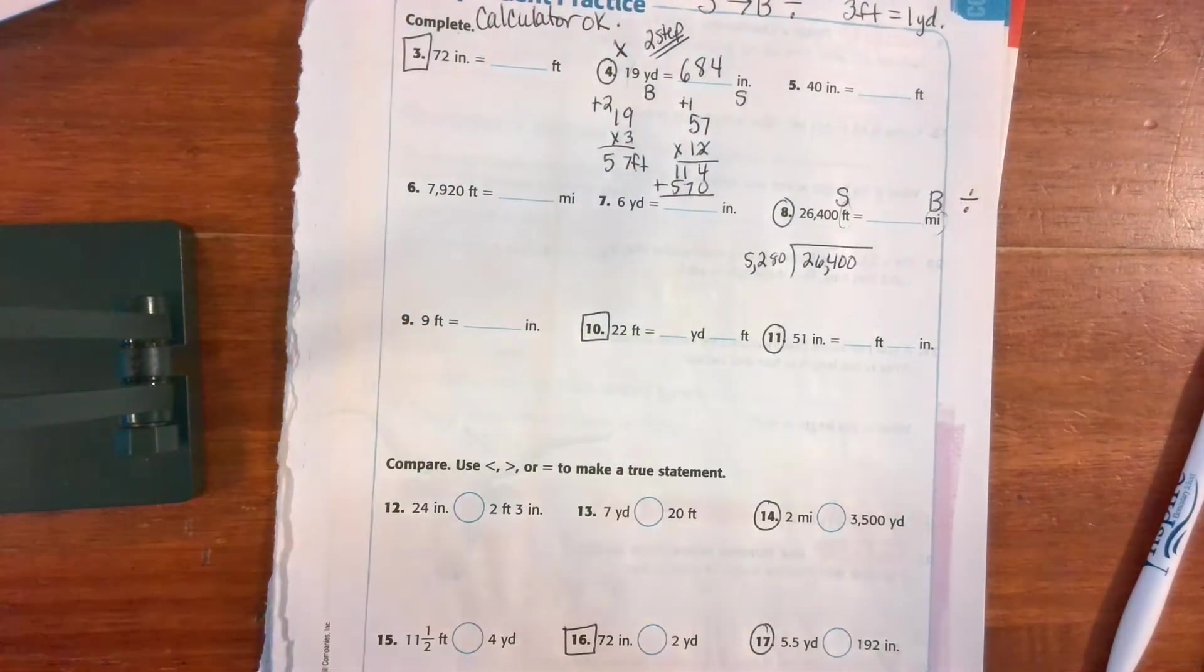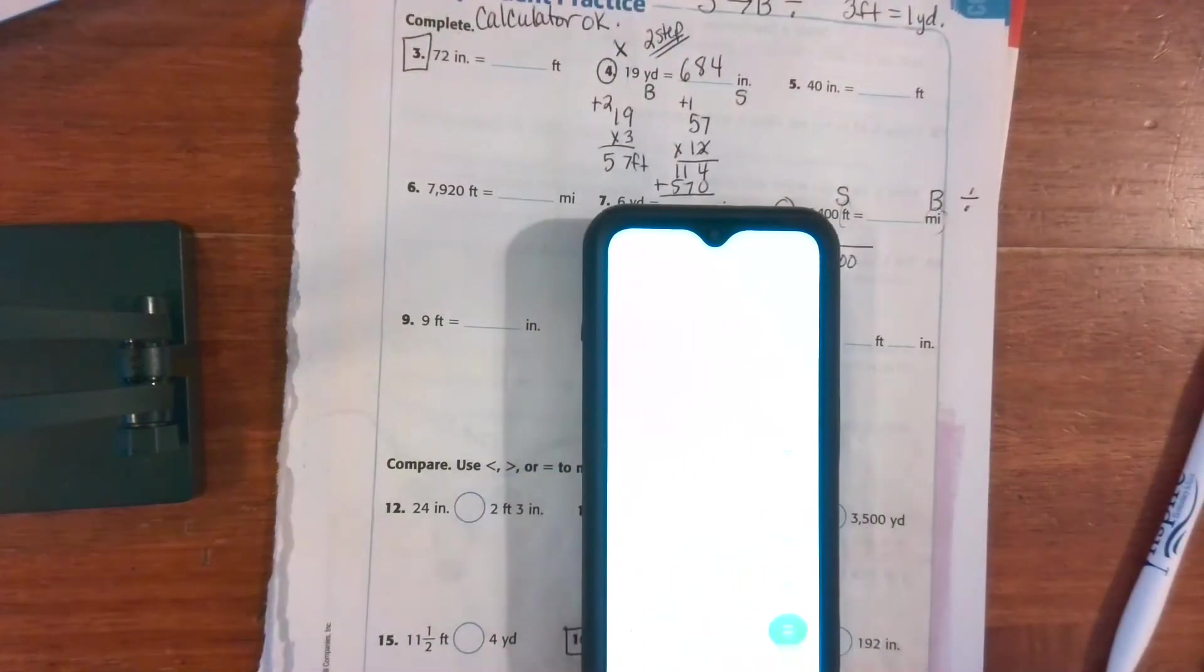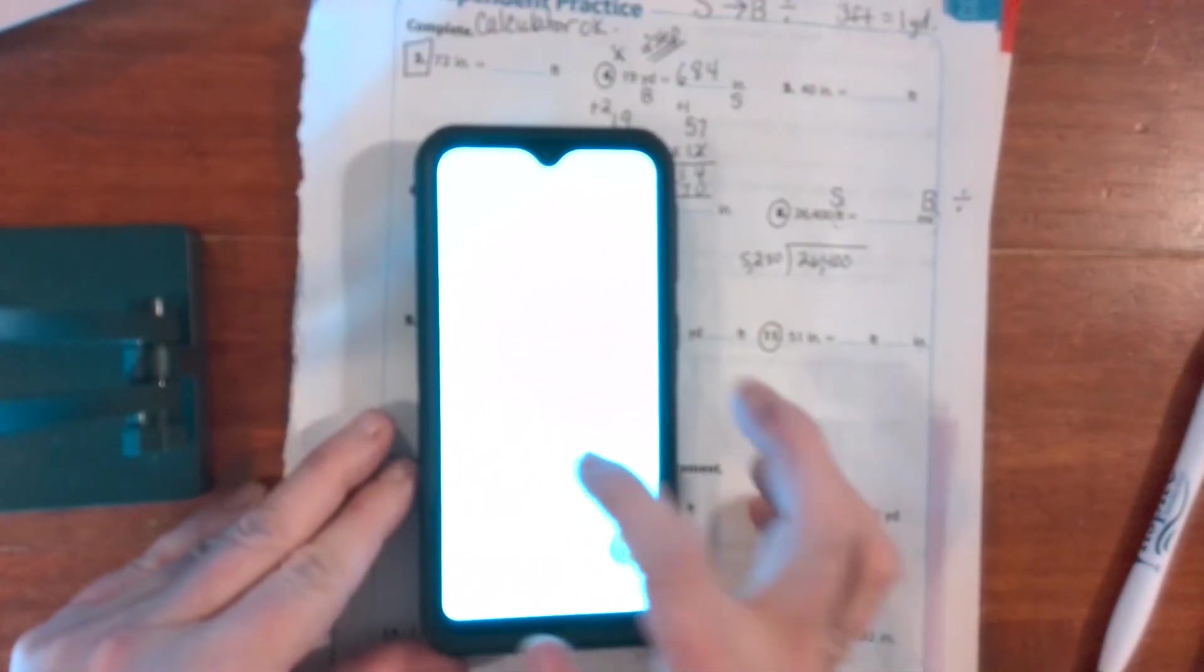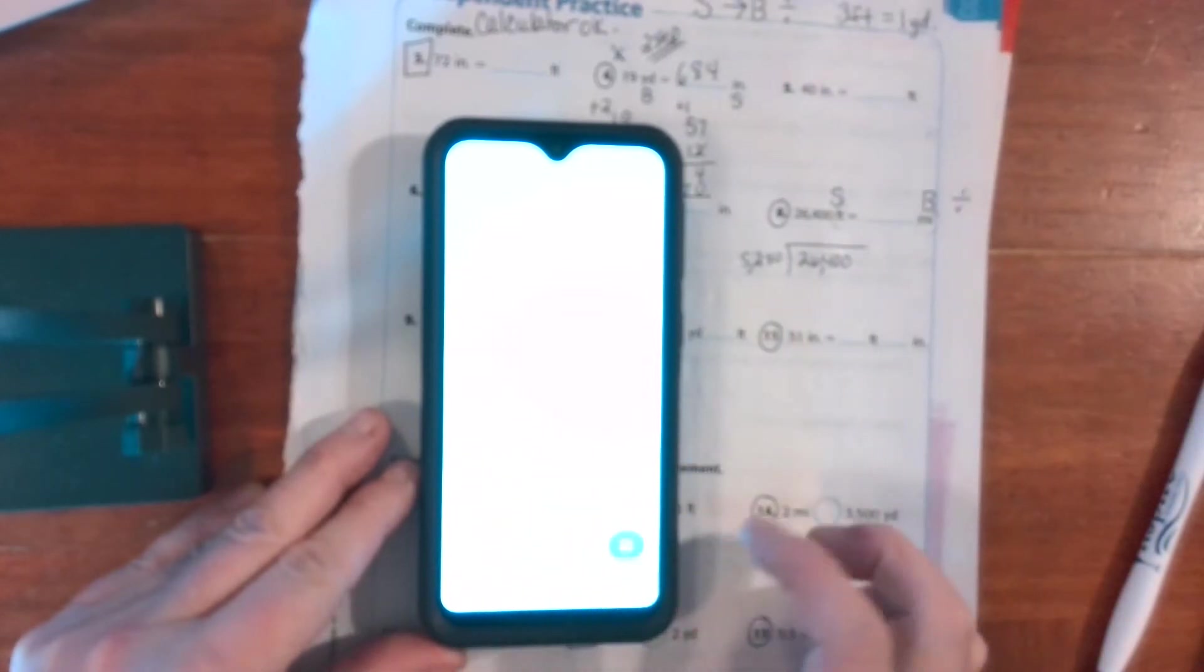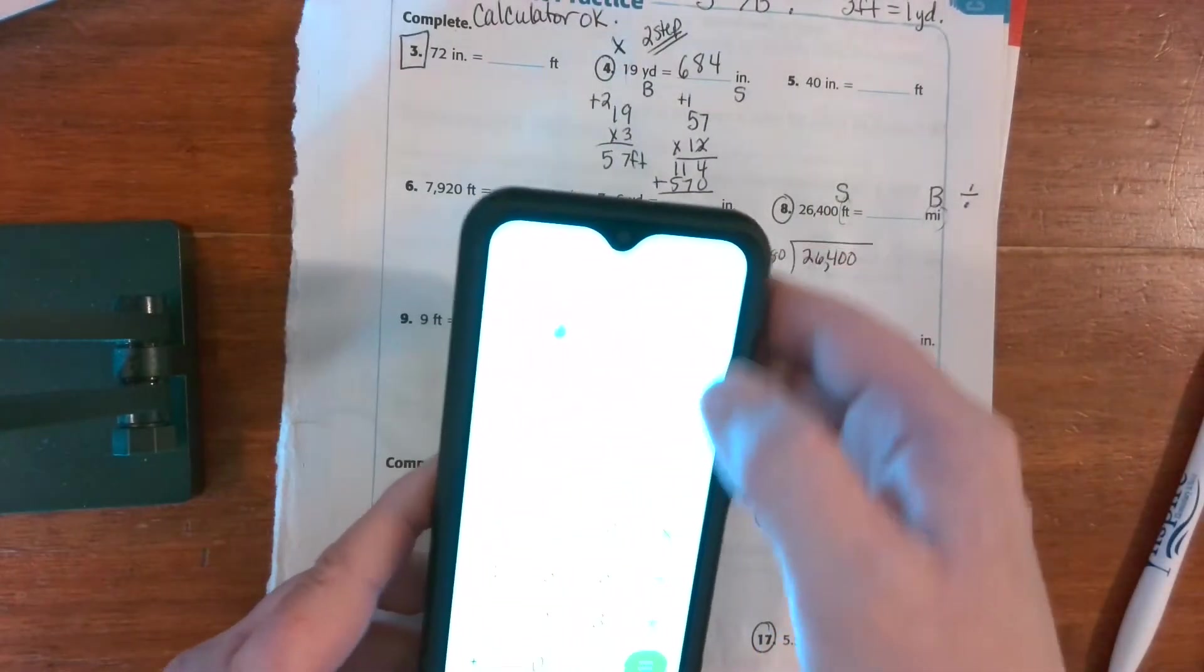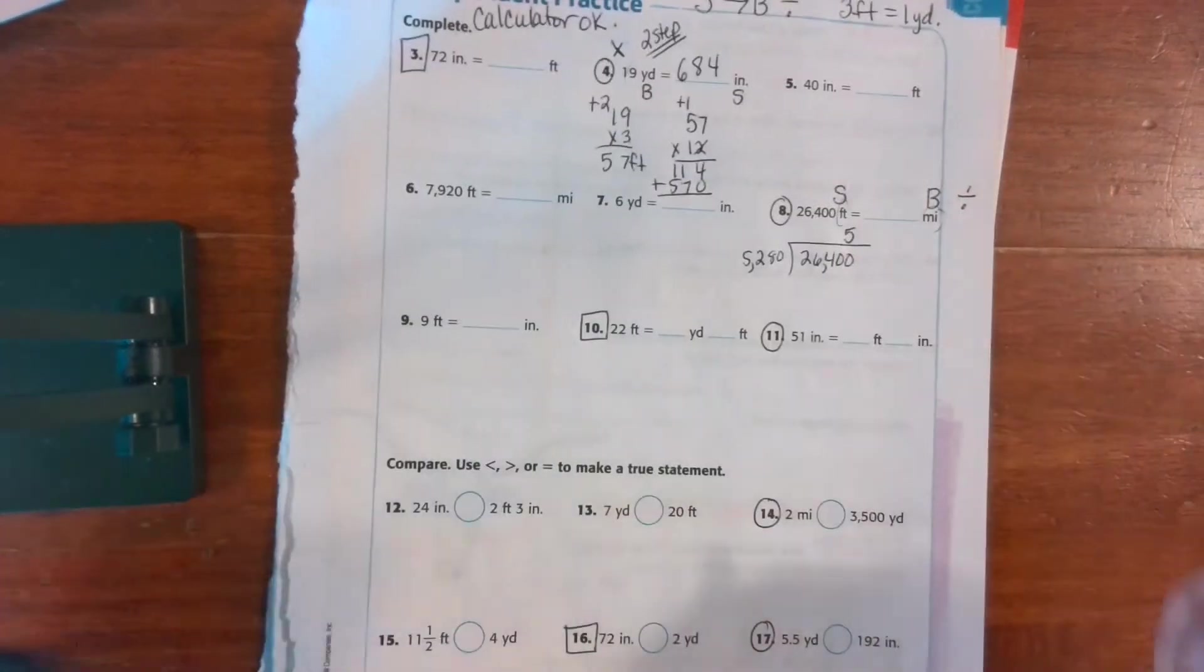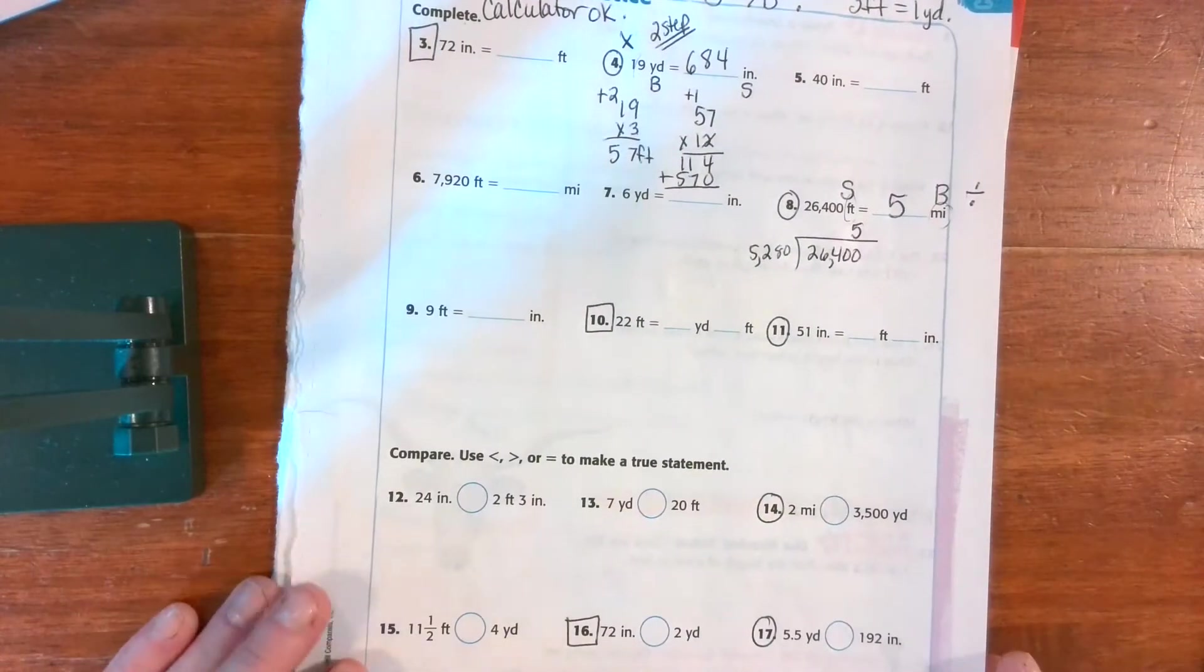I'm going to go grab my phone real quick. All right, so I'm going to plug my numbers in: 2, 6, 4, 0, 0, divided by 5, 2, 8, 0. I know you can't see this very well, but I'm just literally plugging it in. Equals 5. And like I said, feel free to use a calculator.